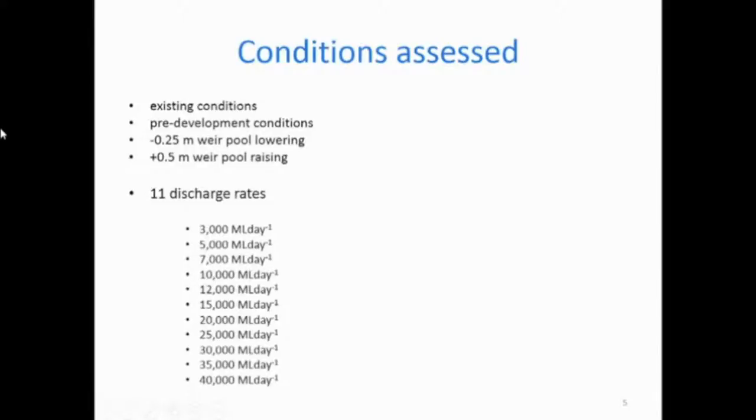We looked at the existing conditions just the way they are now with the lock weir pool at the current heights. We looked at the way it would be if the lock wasn't there, with no weirs, so that's the pre-development condition. We also looked at weir pool manipulations, which could be a management tool for the environmental water needs. You could raise the weir pool to water things or lower it to increase velocities. There wasn't a lot of room for manipulation there, but we did two different scenarios.